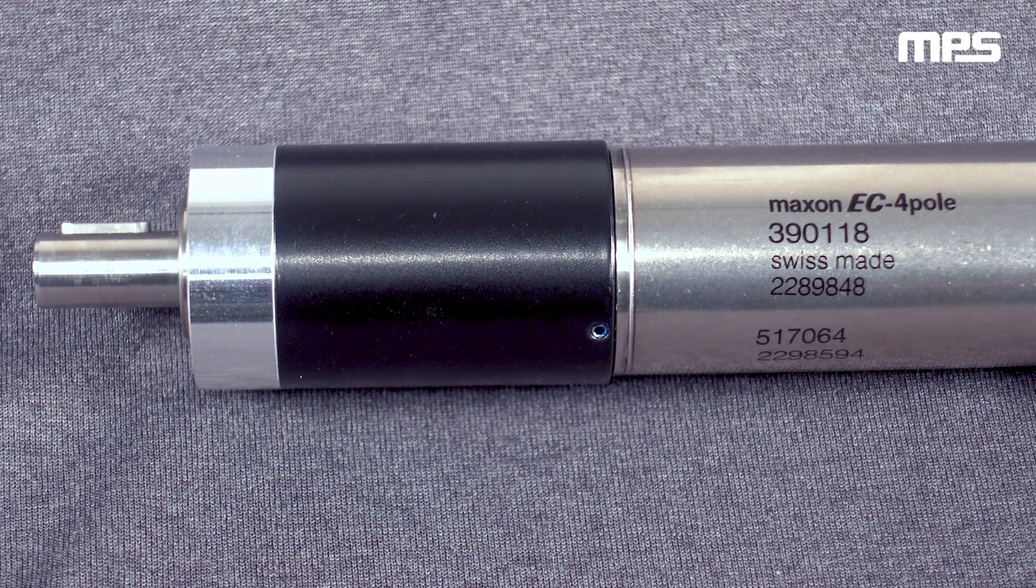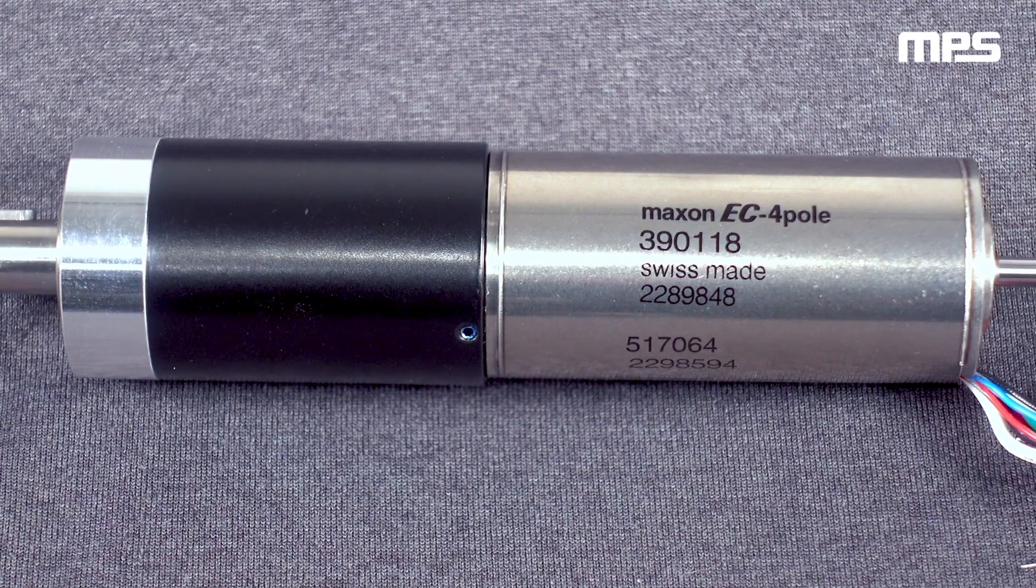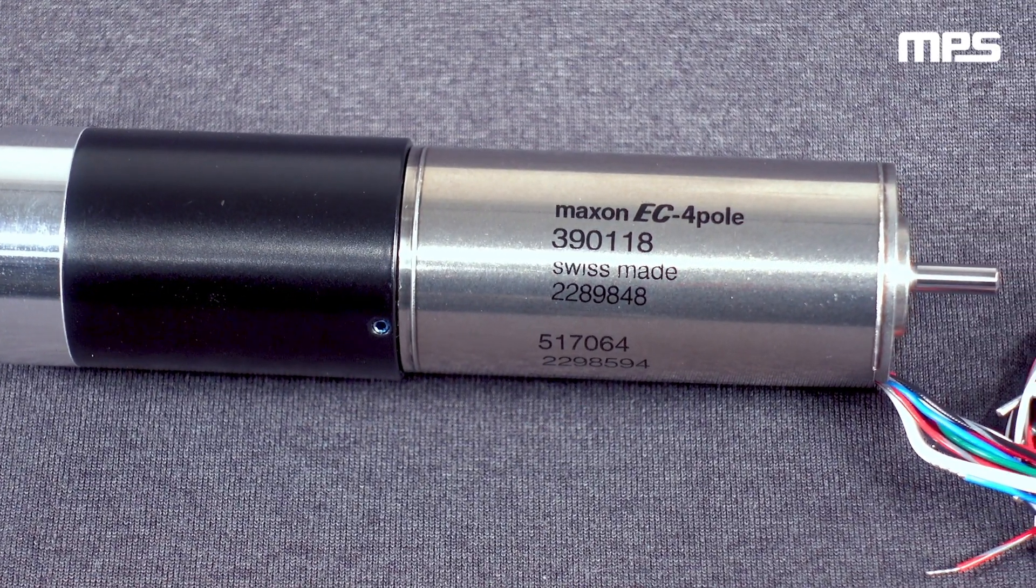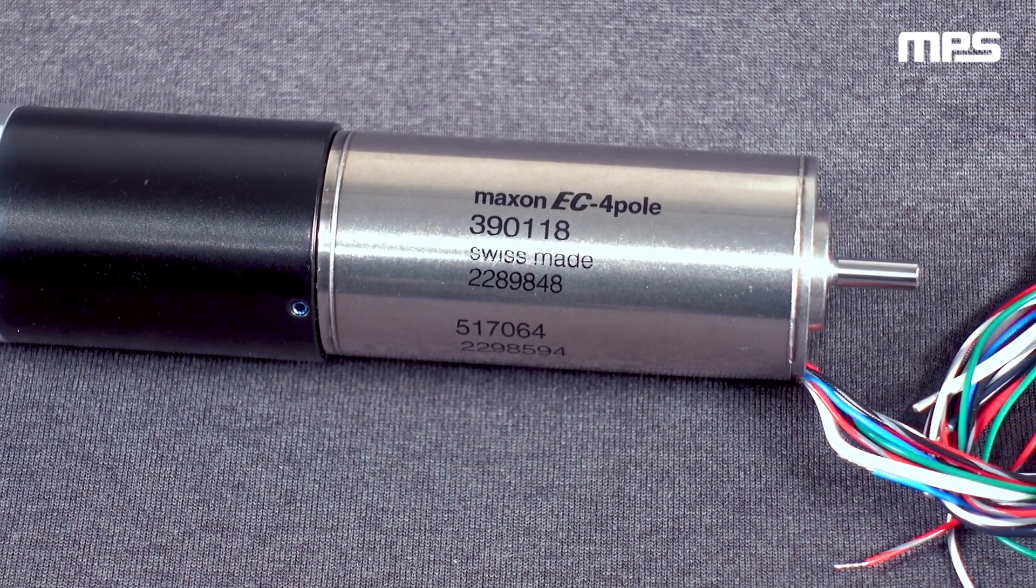From those calculations, we selected a Maxson 30 mm diameter 200 watt brushless DC motor with a matched three-stage planetary gearbox for this application.